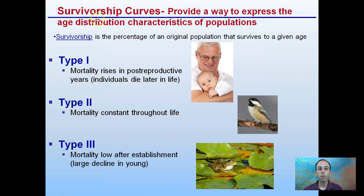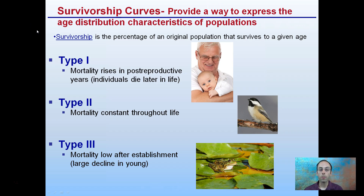Survivorship curves provide a way to express age distribution characteristics of a population. Survivorship is a percentage of an original population that survives to a given age. And we have these three different types.